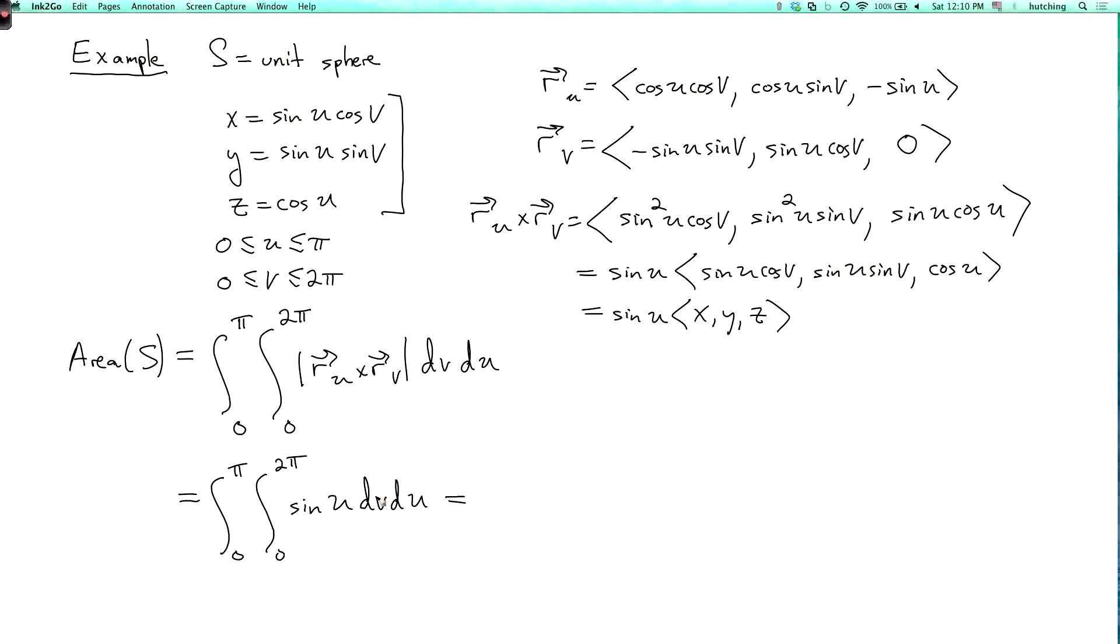Right? And then doing the integral over v, I just multiply by two pi. So I get two pi, integral from zero to pi, of sine u, du. So this is two pi times minus cosine u, evaluated at u equals pi and u equals zero.